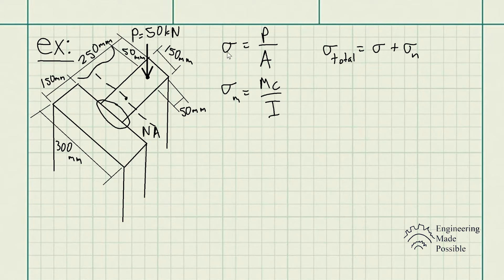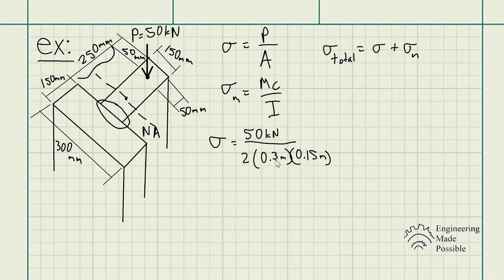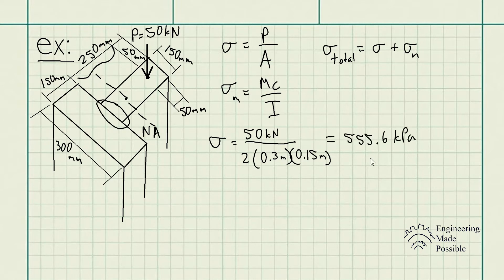It's pretty straightforward to get the axial stress — it's just the force divided by the cross-sectional area. We have the 50 kN divided by the cross-sectional area. Since we have two identical boards, we have 0.3 meters times 0.15 meters for one board, and multiply by two to get the total. The axial stress comes out to 555.6 kilopascals.